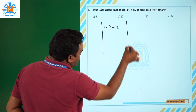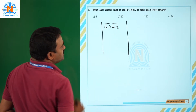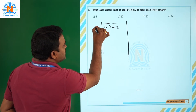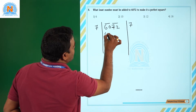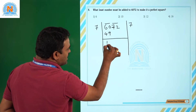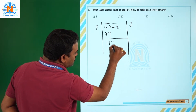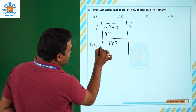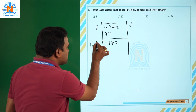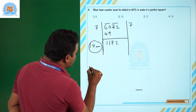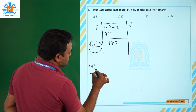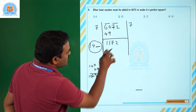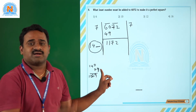Taking digits in pairs from the right: for 60, the nearest perfect square is 49, so we take 7. 60 − 49 = 11, bring down 72 to get 1172. The next divisor starts with 7 + 7 = 14. Trying 147 × 7 = 1029; subtracting, 1172 − 1029 = 143 remains.